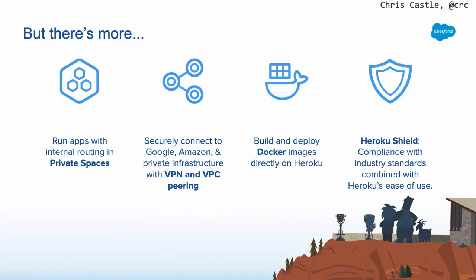There's even more. You can get a private space — effectively a managed private subnet where we handle load balancing for you. You can set up VPN or VPC peering between an AWS VPC or your on-prem data center. You can build and deploy Docker images — if you don't want to use Heroku's curated language deployment, just give us a Docker image and we'll run it and handle load balancing. And there's Heroku Shield for companies with high compliance needs — HIPAA, PCI, and more. Go to heroku.com/compliance to see all the compliance levels Heroku provides.